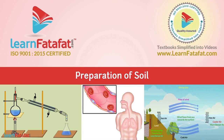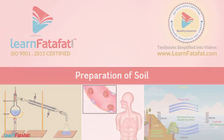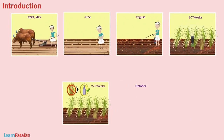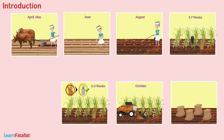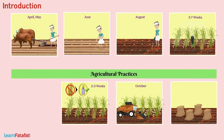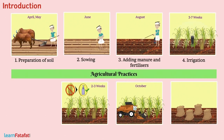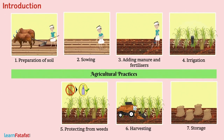Preparation of Soil. During crop production, farmers perform several activities in the farm over a period of time. These activities are called agricultural practices: preparation of soil, sowing, adding manure and fertilizers, irrigation, protecting from weeds, harvesting, and storage. In this video, we will learn about the very first step of cultivation, that is preparation of soil.